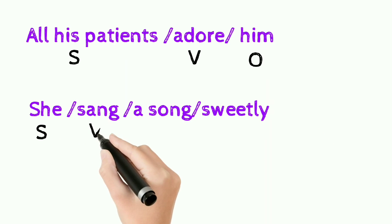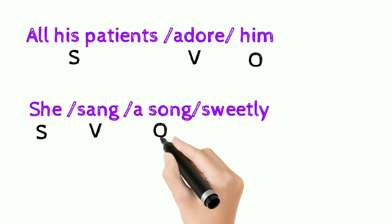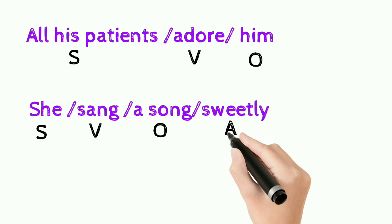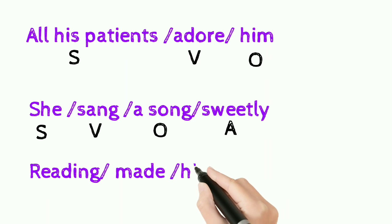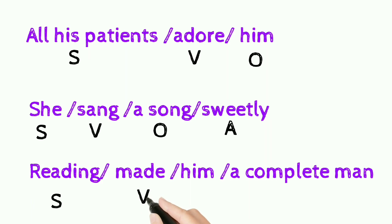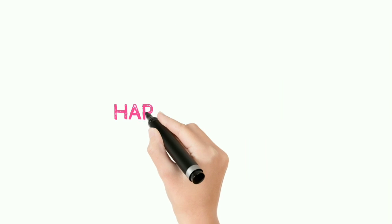Next: 'She sang a song sweetly.' Here 'she' is the subject, 'sang' is the verb. 'A song' answers 'what,' so that is the direct object. 'Sweetly' ends with L-Y and answers 'how,' so that is the adjunct. And finally: 'Reading made him a complete man.' Here 'reading' is the subject and 'made' is the verb. 'Him' answers 'to whom,' so that is the indirect object. 'A complete man' is used for the completion of the sentence, so that is the complement. I hope you all understand this lesson — thank you so much for watching, happy learning!